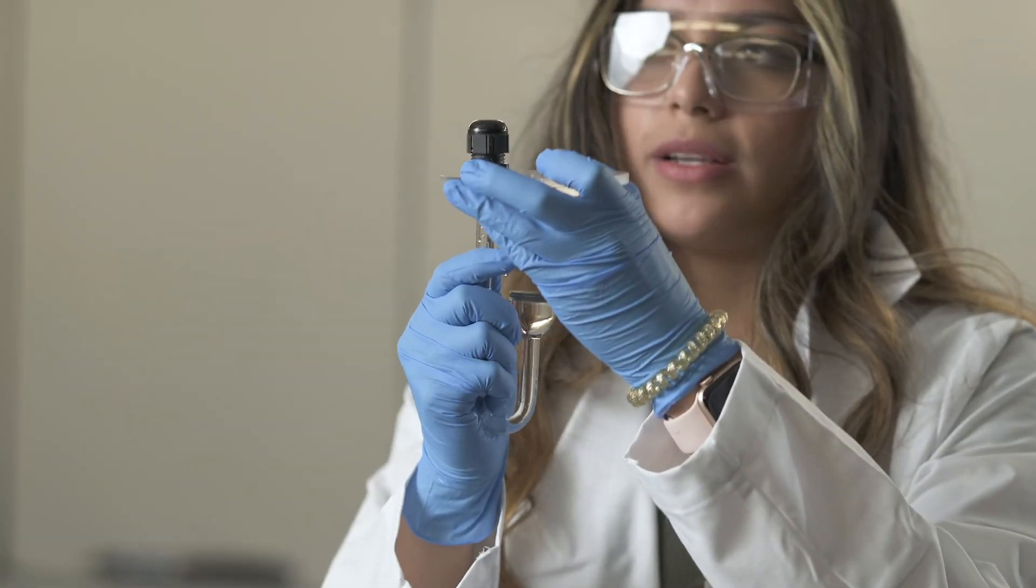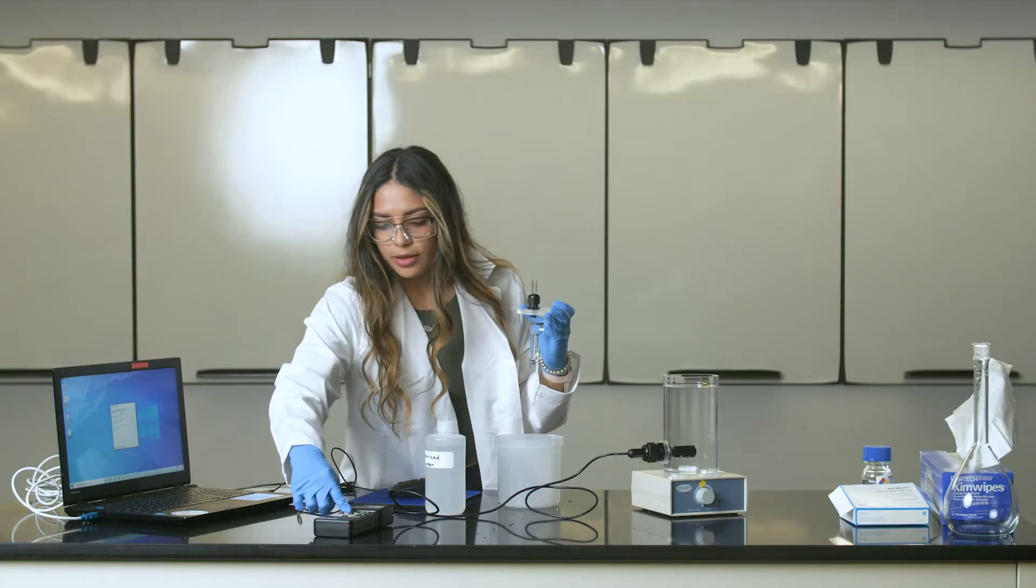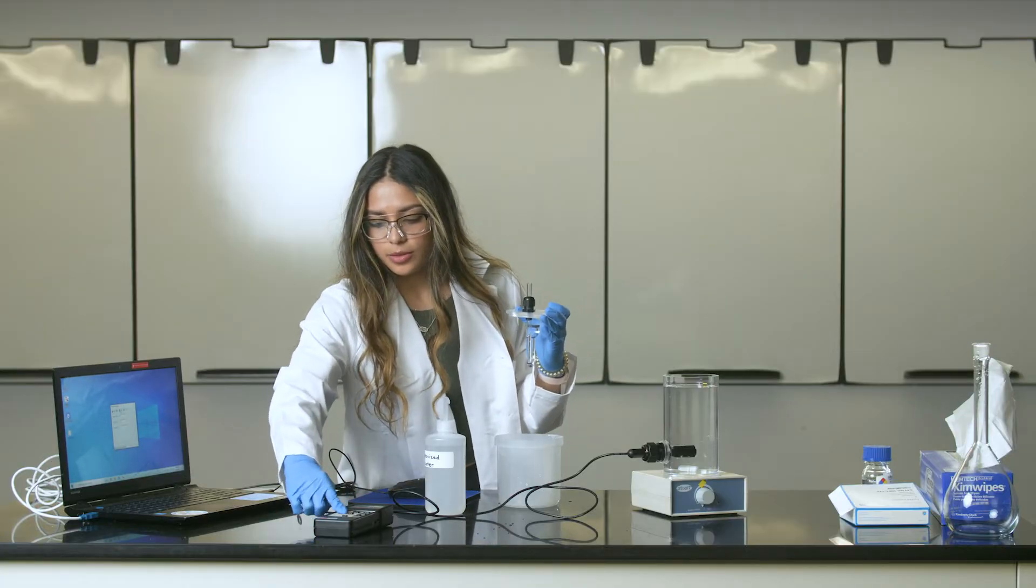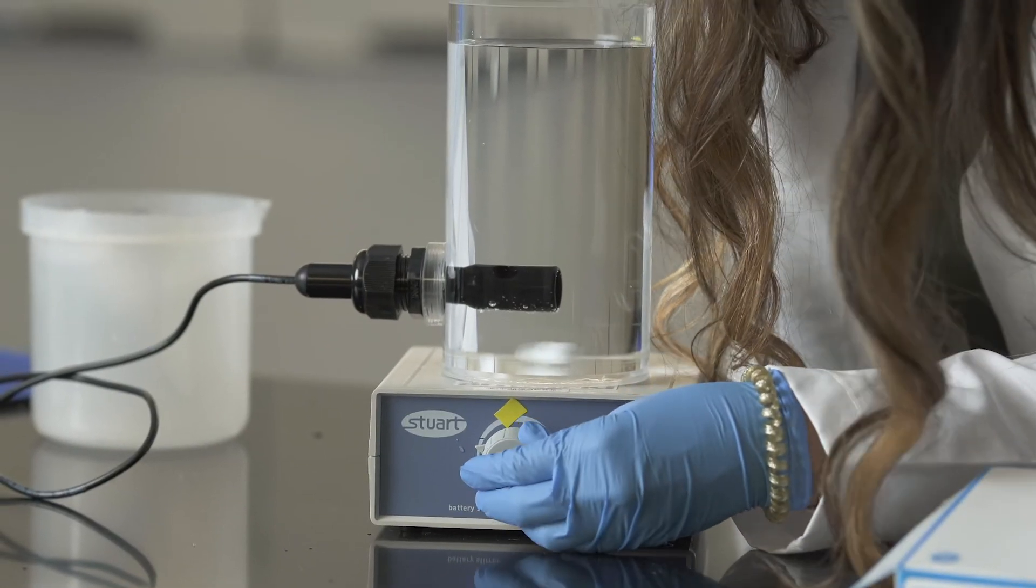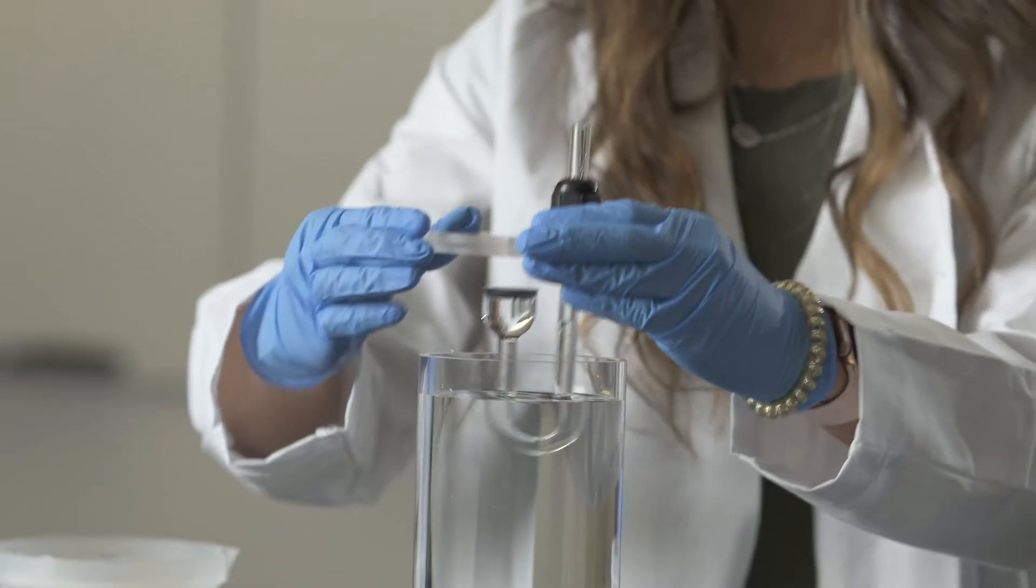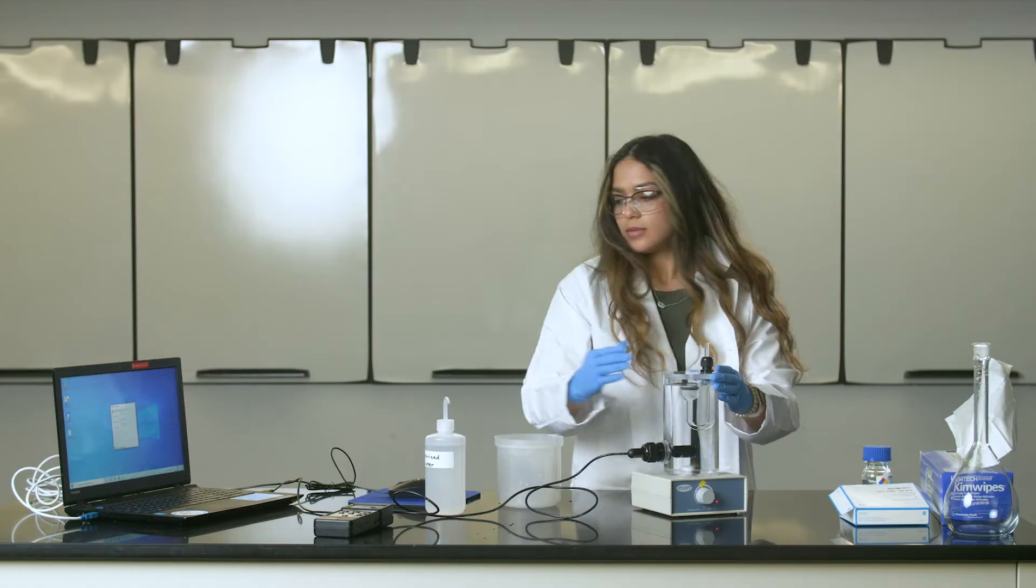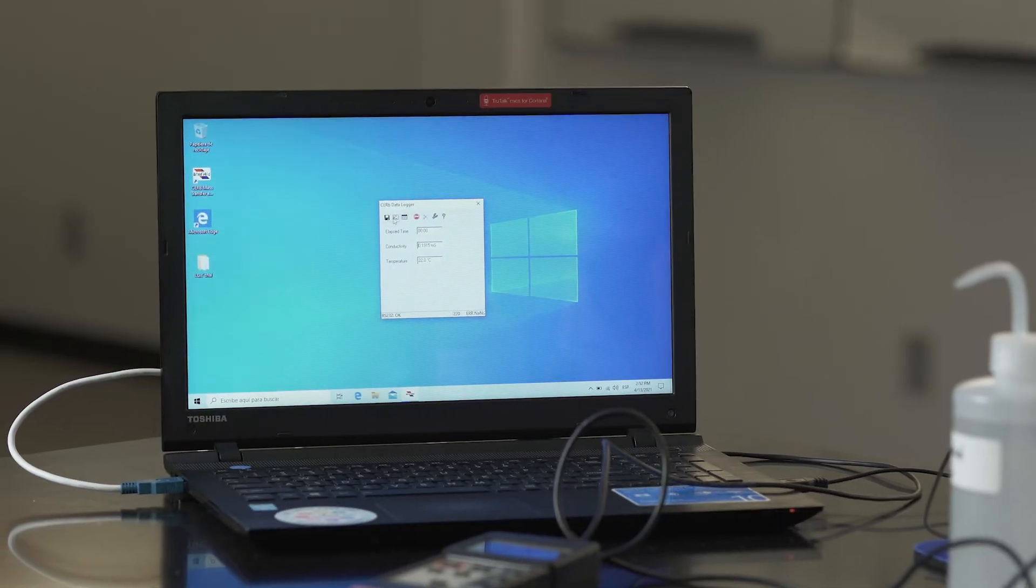Screw the diffusion cell back into the lid. Power on the conductivity meter and press record. Start the agitation and place the diffusion cell into the vessel. Then hit start on the program and open up the graph.